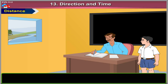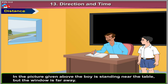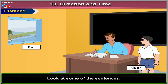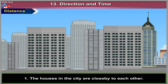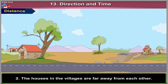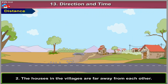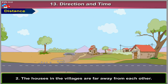Distance. Look at the picture. In the picture given, the boy is standing near the table, but the window is far away. The houses in the city are close by to each other. The houses in the villages are far away from each other.